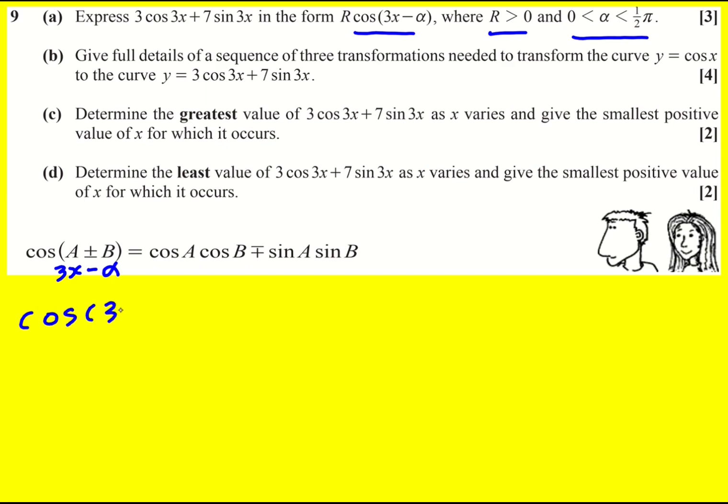So cos of 3x minus alpha is equal to cos 3x cos alpha plus sine 3x sine alpha, which means because I've got R, I'm just going to put an R in front of that one. I times all of this by R, which is equivalent to timesing each term by R.